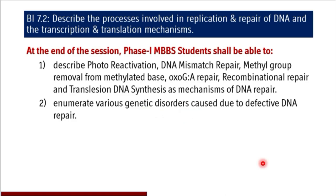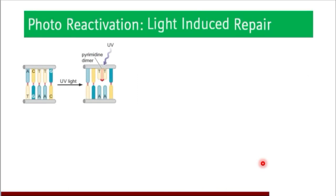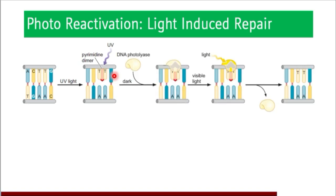The first of the miscellaneous DNA repair systems is photoreactivation, that is light-induced repair. Because of UV light damage, pyrimidine dimers are formed — maybe TT or CC pyrimidine dimers. An enzyme called DNA photolyase is responsible for correcting the error caused due to UV light.